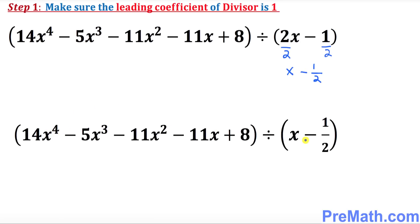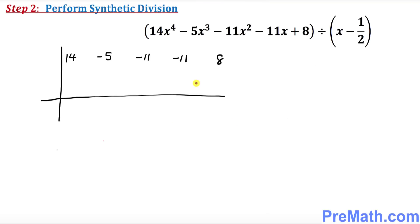So now our problem is going to look like this form. Now we are going to perform our synthetic division. The very first thing — as you can see, I have put down the coefficients of the dividend: 14, negative 5, negative 11, negative 11, and 8. Focus on the divisor: the number is negative 1 over 2, and the opposite sign gives us positive 1 over 2, which goes up here.